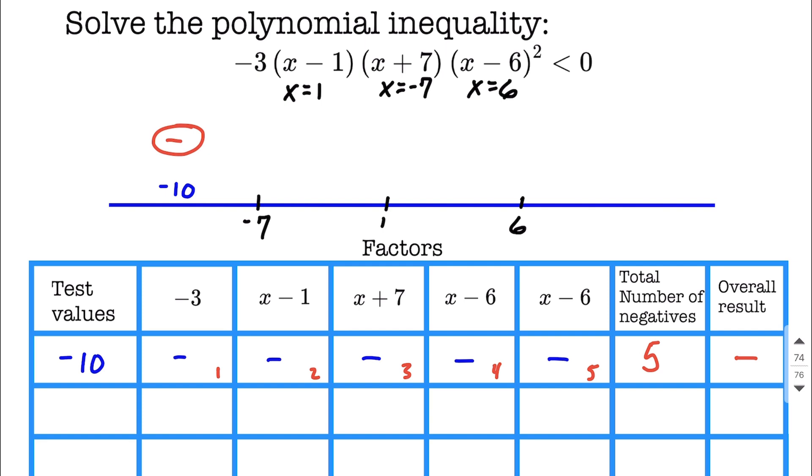Now we just repeat the same process a few more times. Next, we pick another test value between negative 7 and 1. Let's go ahead and pick 0. That's a nice test value. Negative 3, again, always going to be negative. From here, we test in, we've got 0 minus 1 makes a negative.